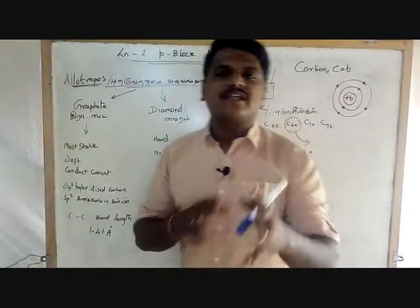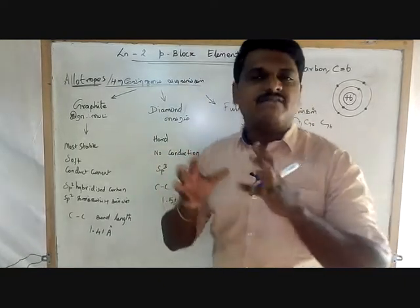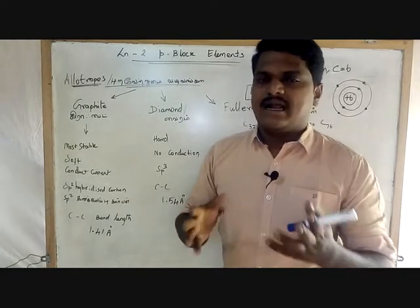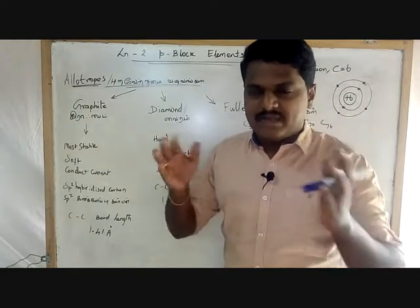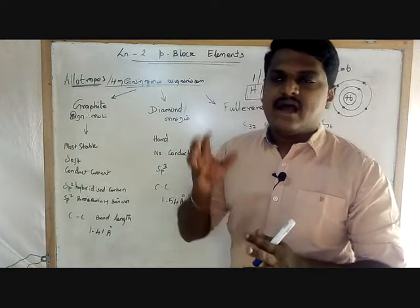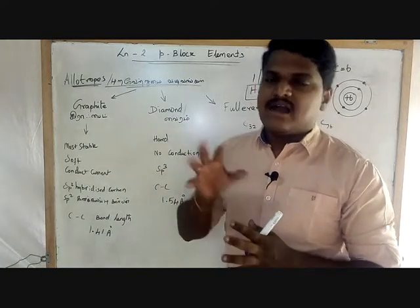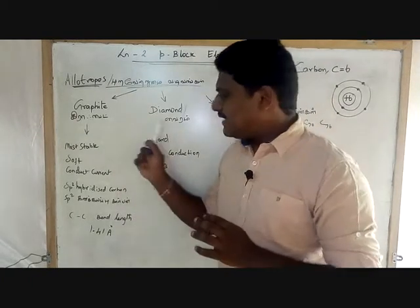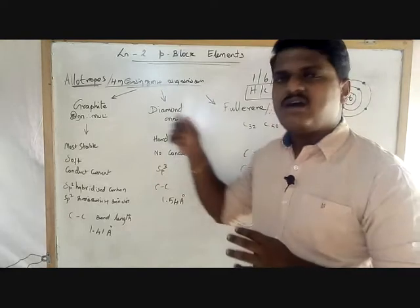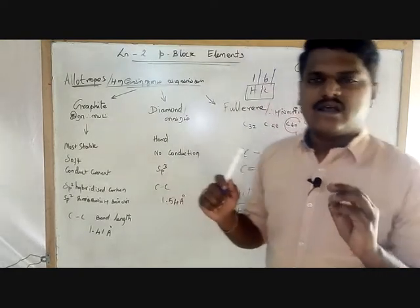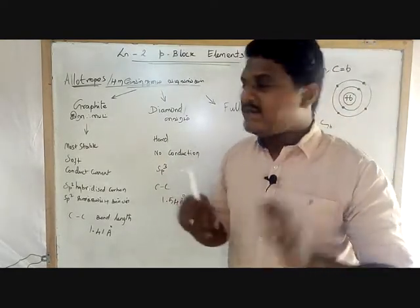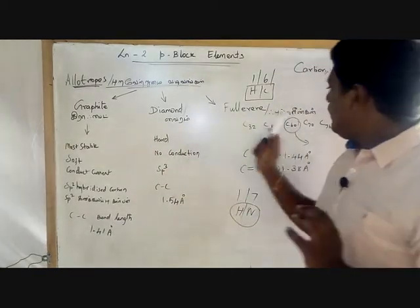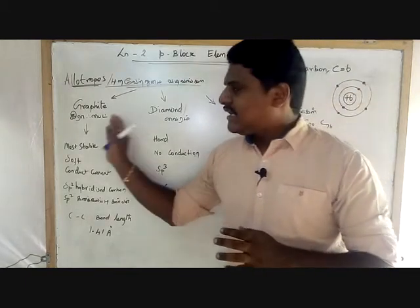The topic is allotropes. Carbon has different forms. The 3 major allotropes of carbon are graphite, diamond, and fullerene. These are the 3 major and important allotropes of carbon.